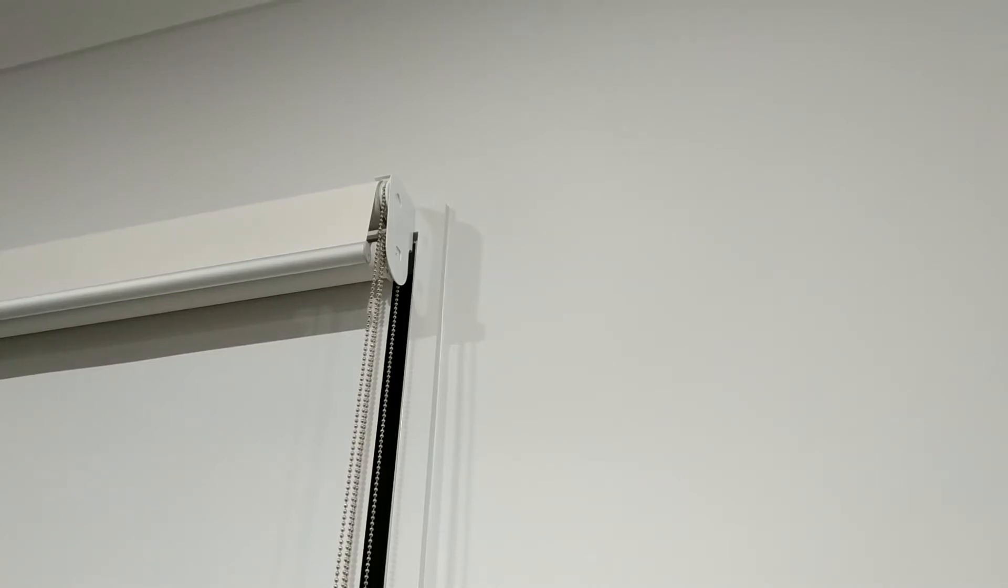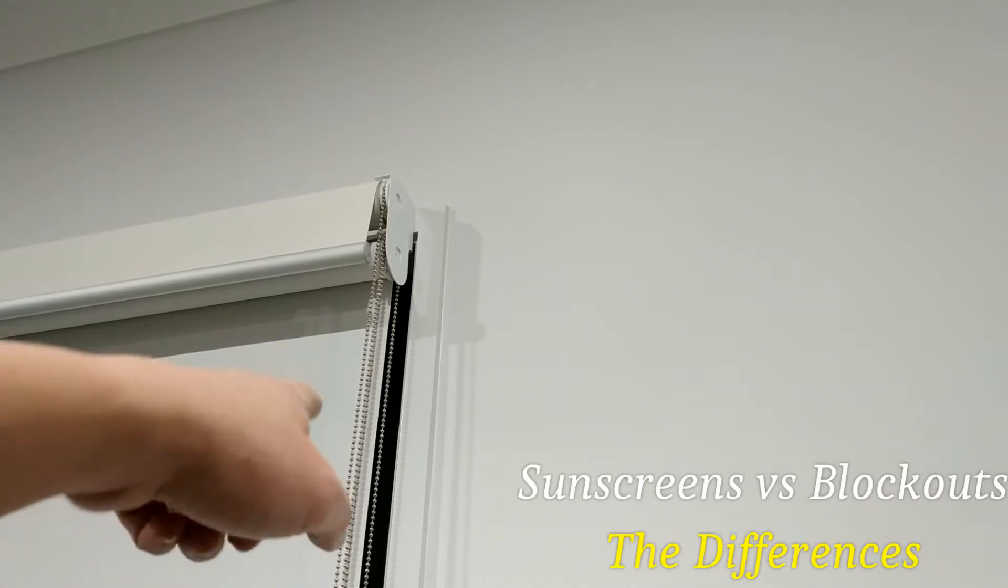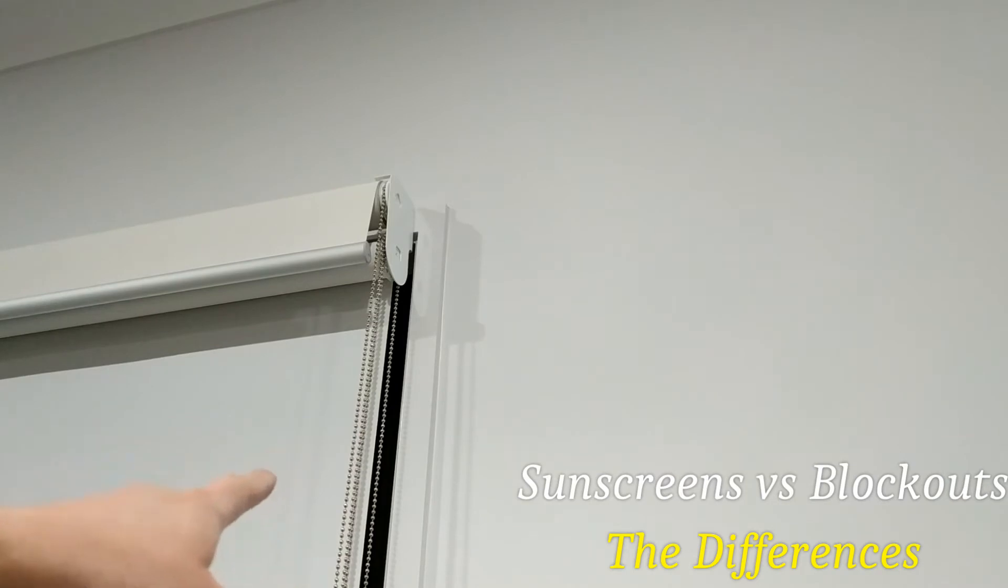Now the first thing I want to talk about is the different types of blinds. One type, as you can see, the one behind is called sunscreen, and the one above here is called block out. They're used for different purposes.